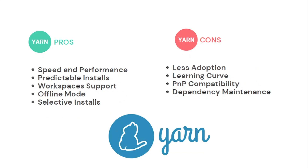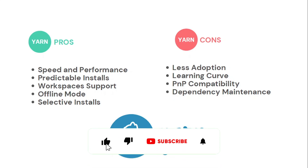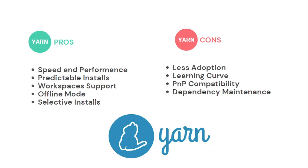Now let's look at some pros and cons of using yarn. On speed and performance: yarn has a parallel installation and caching mechanism that makes it relatively faster than npm. There's also a predictable installs feature — yarn comes with a yarn.lock file, similar to package-lock.json, that ensures consistent package versioning and reduces compatibility issues. yarn also has workspace support and an offline mode — it caches packages which allows you to work offline without disruption.